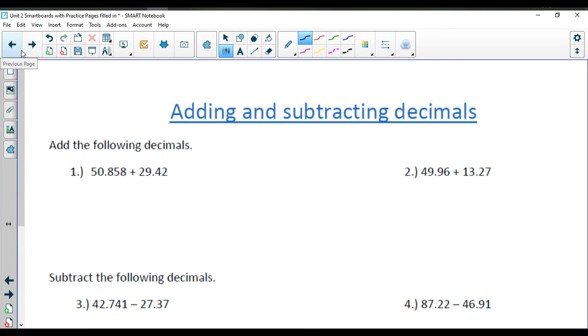Over on your next page, talking about adding and subtracting decimals, we want to make sure that we are lining up our decimal point here. So we have 29.42. Add on that 0. 8 plus 0 is 8. 5 plus 2 is 7. 8 plus 4 is 12. Bring down the decimal point. Add. And then we get an 8 right there. So 80.278.